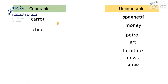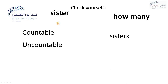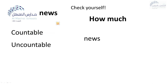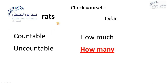So we have to differentiate between countable and uncountable nouns because we are going to deal with how many and how much. Look at this word — sister. We can count it, so it's countable. And we can say how many sisters. What about news? Uncountable noun. What about rats? We can count rats, so — how many rats. What about bottle? Countable.